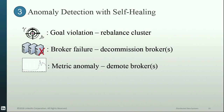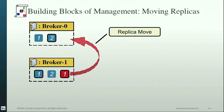The final target of Cruise Control is to support anomaly detection with self-healing. An anomaly could be a goal violation, a broker failure, or a metric anomaly. Self-healing indicates an automated action to fix the detected anomaly. Goal violations are fixed by rebalancing the cluster, broker failures are fixed by decommissioning the failed brokers, and metric anomalies are resolved by demoting the abnormal brokers. We'll look into the details of each while discussing the architecture of Cruise Control.